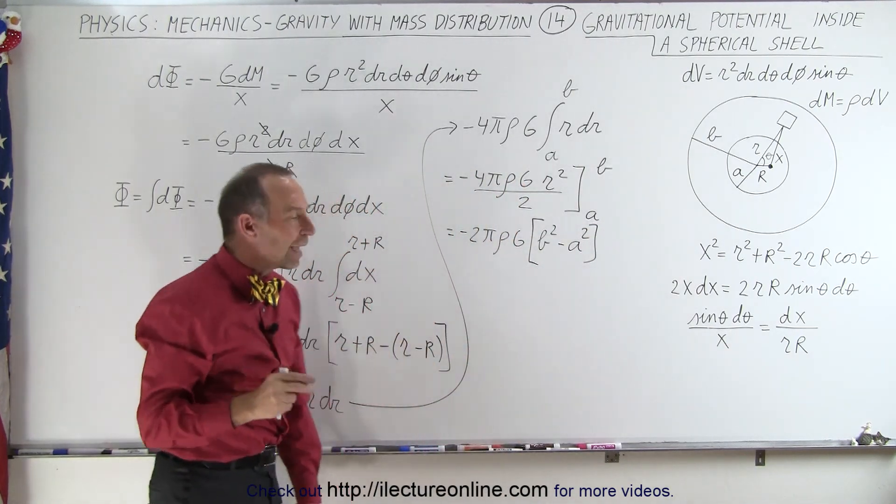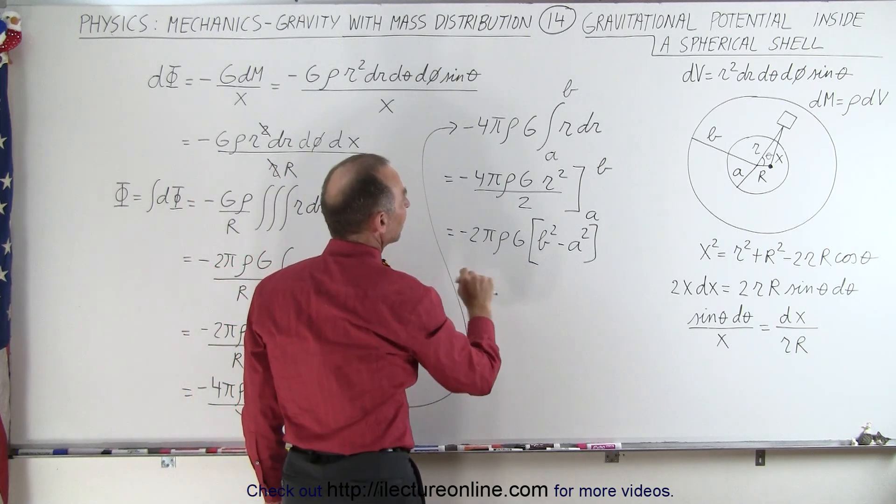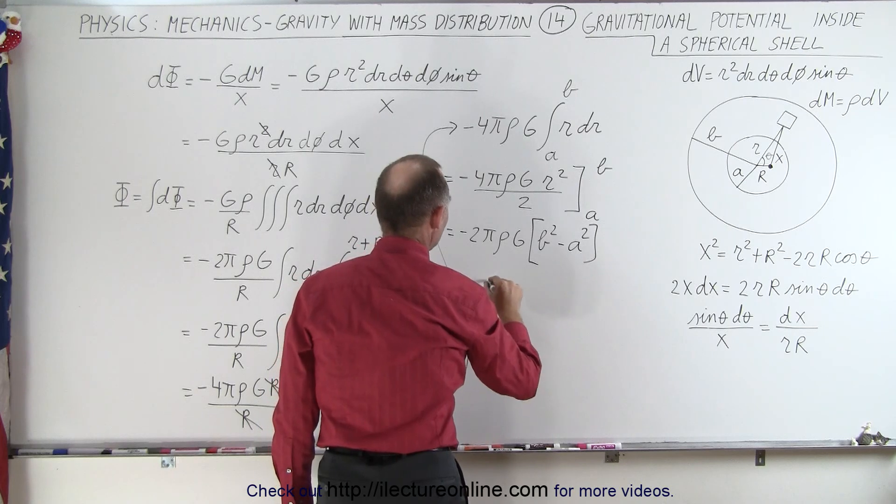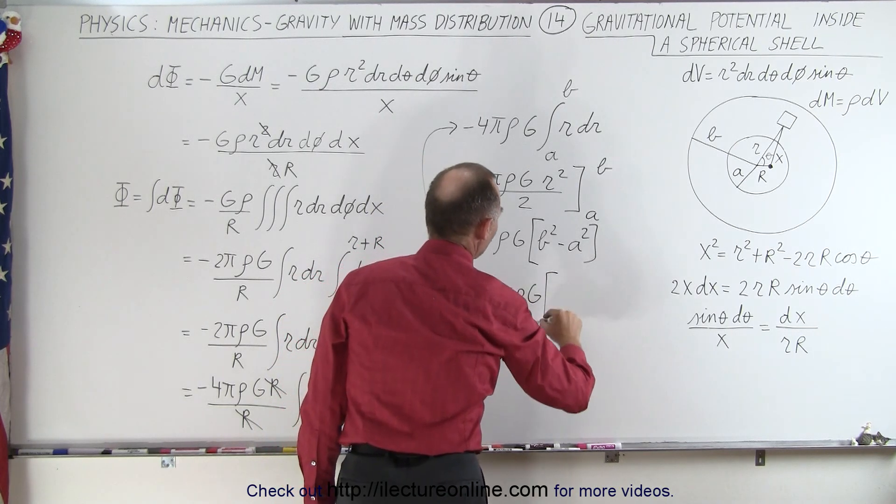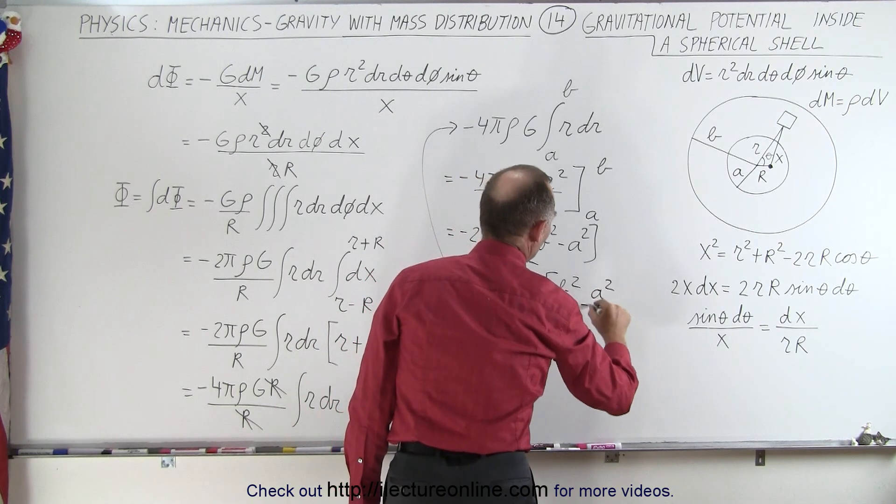And then you'll find out that when we deal with this, we typically like to have a 4 pi rho g in there, so we're going to multiply this by 2, divide by 2. So this becomes minus 4 pi rho g times the quantity b squared over 2 minus a squared over 2.